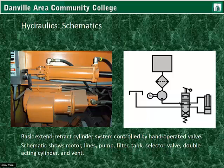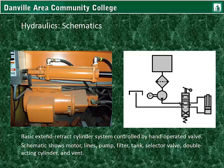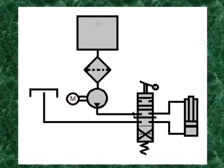A bit on schematics. Here's a basic extend-retract cylinder system controlled by hand-operated valves. The schematic shows the motor, lines, pump, sediment filter, reservoir or storage tank, selector valve, double-acting cylinder, and the vent for the control valve. Here is the tank, the filter, the pump, and the pump motor, with the line going into the selector valve and the vent for the selector valve. Also shown is the output of the valve that forces the cylinder back in with pressure, and the other line that forces the cylinder outward with pressure.